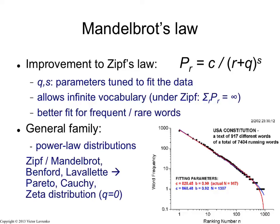Another advantage of using Mandelbrot's law is it's nicer if you try to reason about frequencies probabilistically, because it allows infinite vocabularies. One annoying thing about Zipf's law is if you use it to predict the probabilities of words, you cannot have an infinite vocabulary, because Zipf's law is just 1 over x, and we know that 1 over x integrates to infinity — it's not a proper probability distribution over ranks. But with Mandelbrot's law, as long as S is above 1, you have a proper probability distribution that integrates to a finite number, and you can use it in many models that you might construct.